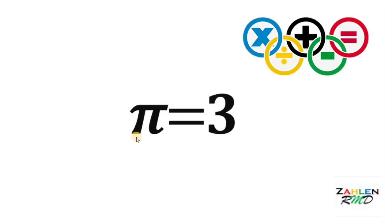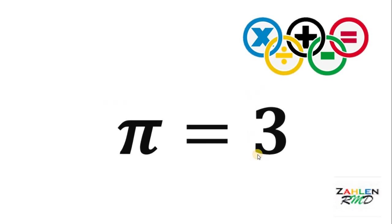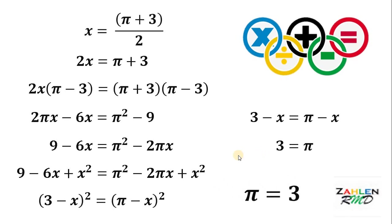And there you go, pi equals 3. But we know pi is not equal to 3. Therefore, your goal now is to find out which line in this proof is incorrect — or rather, which line in this proof is not always true.